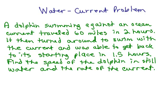A dolphin swimming against an ocean current traveled 60 miles in 2 hours. It then turned around to swim with the current and was able to get back to its starting place in 1.5 hours. Find the speed of the dolphin in still water and the rate of the current.